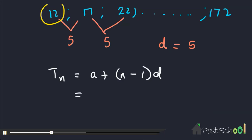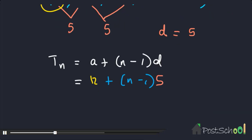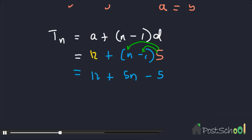Now we can substitute: tn = 12 + (n-1) × 5. Distributing inside, we get 12 + 5n − 5, which simplifies to tn = 5n + 7. That is the general term of the sequence.